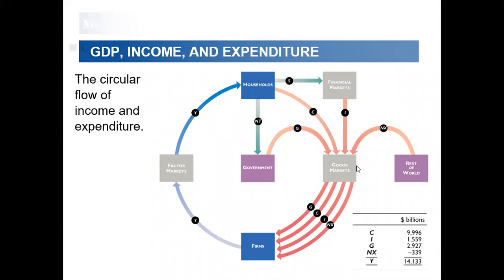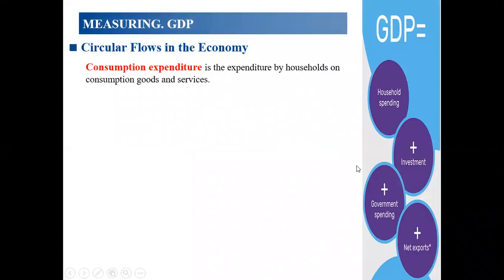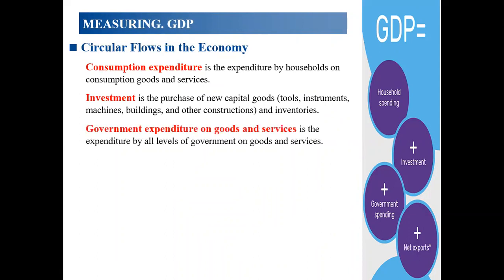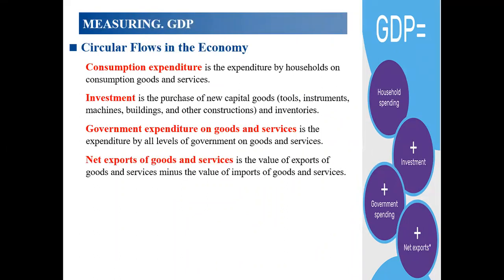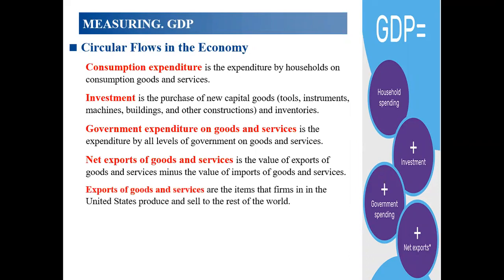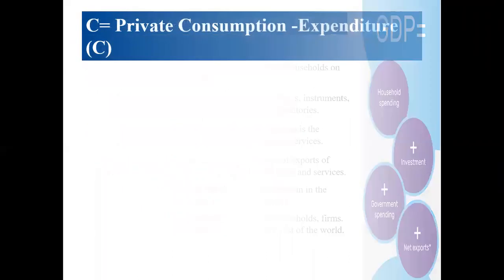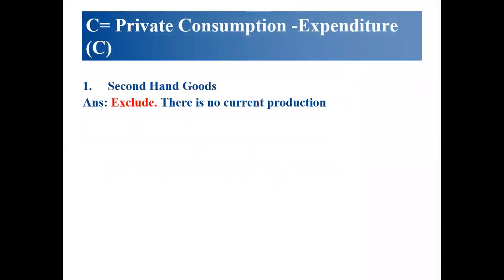The circular flow explains the four components of GDP: consumption — expenditure by households on goods and services; investment — by businesses on capital goods such as instruments, equipment, and buildings; government — spending on health, education, and other services; and net exports — export minus imports, or inflow minus outflow. Second-hand goods are excluded because there is no current production.